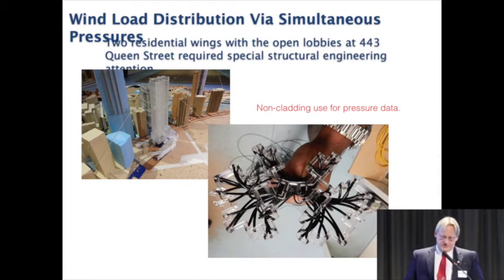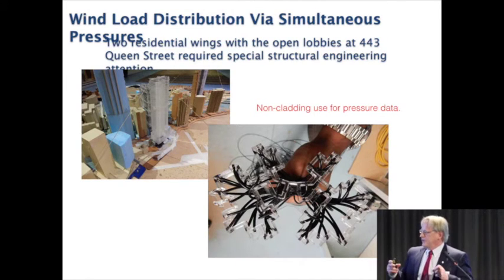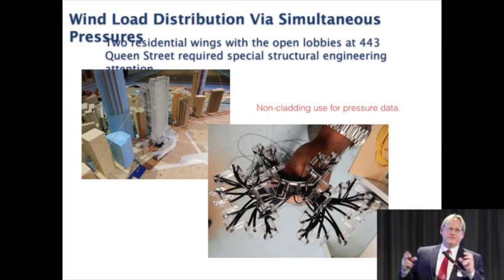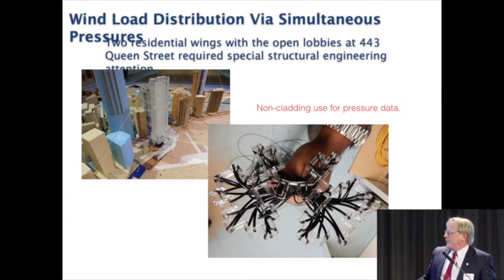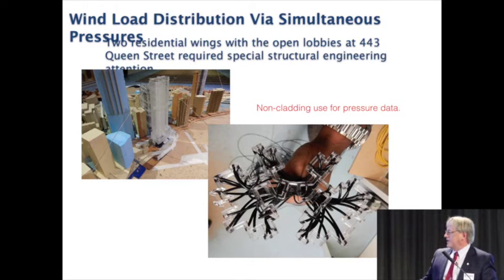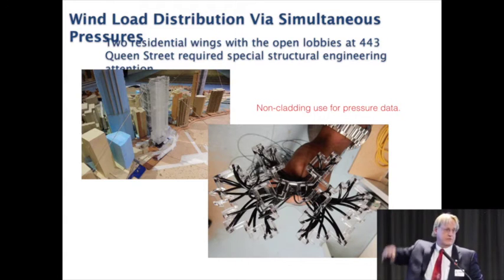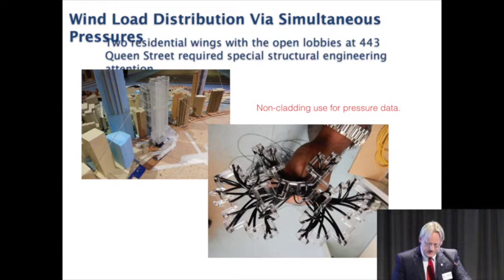Turning to 443 Queen Street next door: the building has a north wing and south wing connected by a relatively slender link over 47 storeys. A key question for the structural engineers was the relative sharing of load between those two wings so they could design the connecting link. This can be resolved using simultaneous pressure measurements on the wind tunnel model, giving the load distribution between the wings at any given instant.